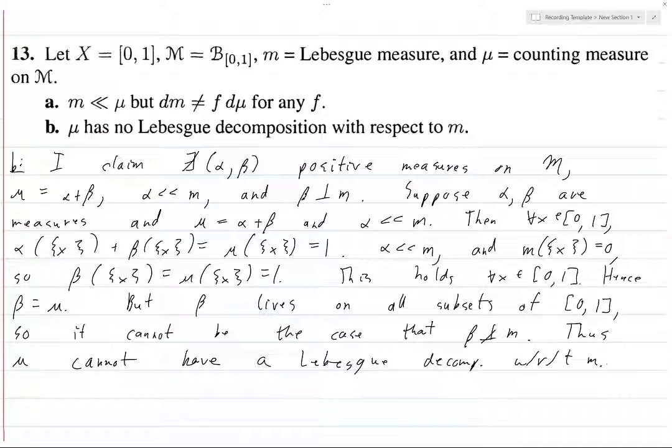And so, this kind of shows you why, or kind of justifies why we really need sigma finiteness in our assumptions on those theorems. So yeah, I guess that means that this problem gives us a little more insight into the theorems of this chapter. But anyways, we are done. Thank you very much.